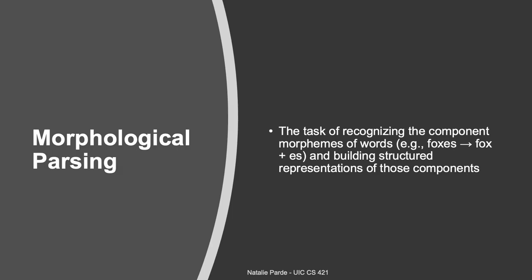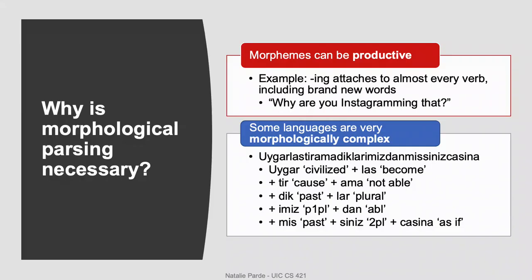Morphological parsing is the task of automatically recognizing which morphemes are present in a word and then building structured representations of those morphemes. Morphological parsing is necessary for a variety of reasons in language understanding tasks. One way it can be really useful is handling new words. For example, if you are Instagramming a picture of a random salad, I might ask you: why are you Instagramming that?